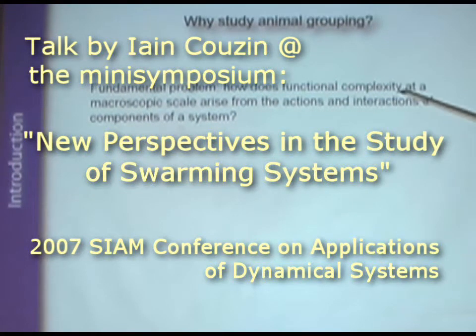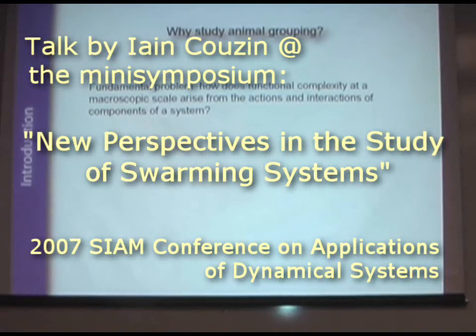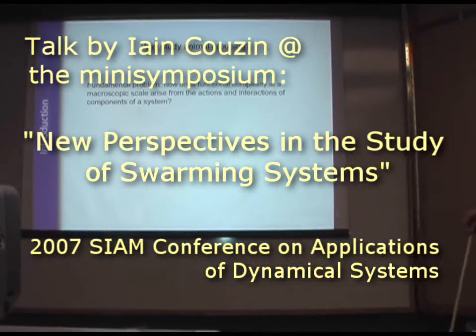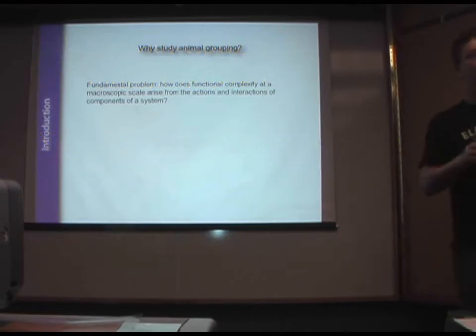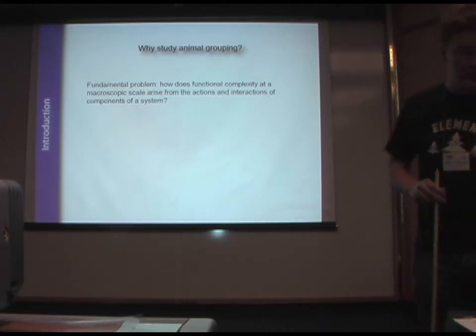I think there's a fundamental problem in biological systems, which is that if we want to understand functional complexity at a microscopic scale, such as the functioning of tissue, we must understand how the actions and interactions of the components, could be cells and so on, function.